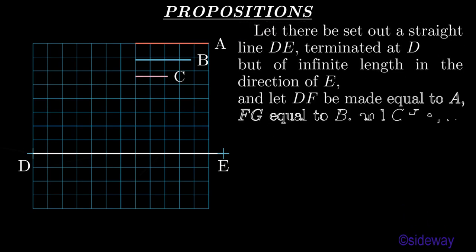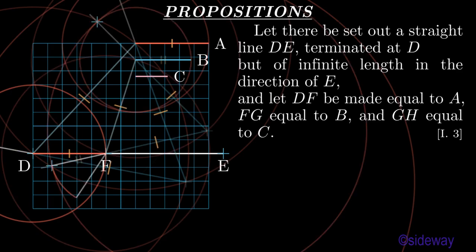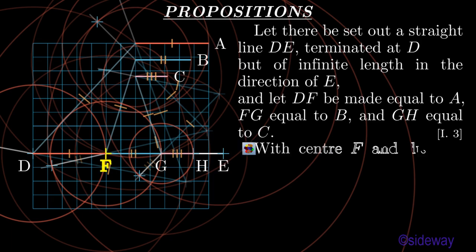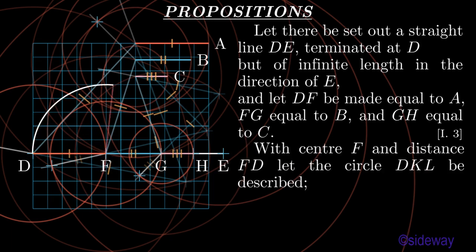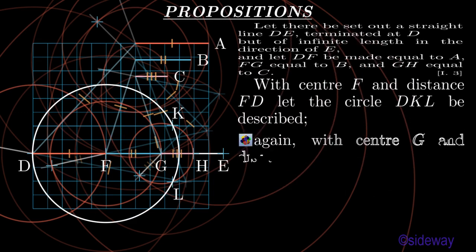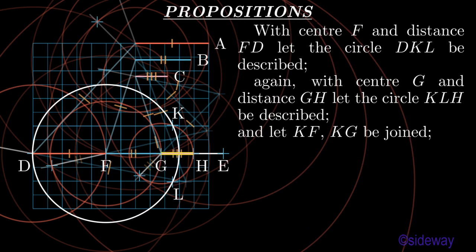Let there be set out a straight line DE, terminated at D but of infinite length in the direction of E. And let DF be made equal to A, FG equal to B, and GH equal to C, by Book 1 Proposition 3. With center F and distance FD, let the circle DKL be described. Again, with center G and distance GH, let the circle KLH be described. And let KF, KG be joined.